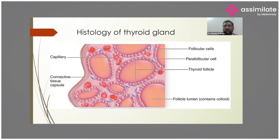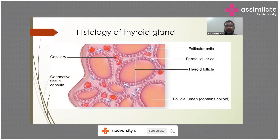As most of you must be knowing, the thyroid gland itself will consist of thyroid follicles, and the follicles will be surrounded by the parafollicular cells, which will be interspersed in between the thyroid follicles. The follicle itself will be filled with colloid, and the interstitial space will be filled with connective tissue and capillaries, as is common in any other tissue of the body.